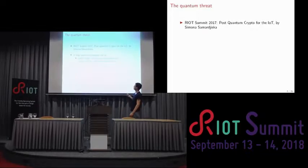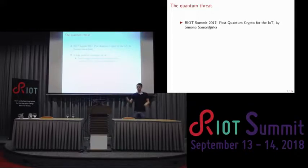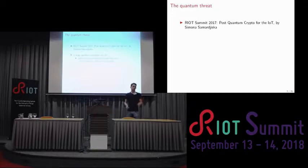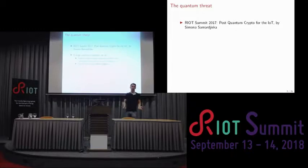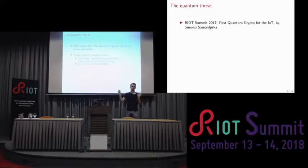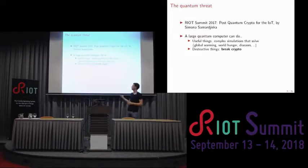So what are we up against? A large quantum computer can do all sorts of useful things. There are promises that it can solve global warming, physics simulations, and cure diseases. And it can also do not-so-great things, such as break our crypto. We're going to focus on that today, leaving the quantum computing details aside and focusing on what it does to our crypto.